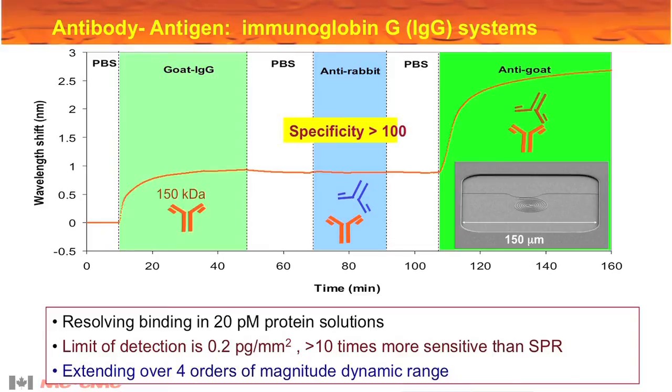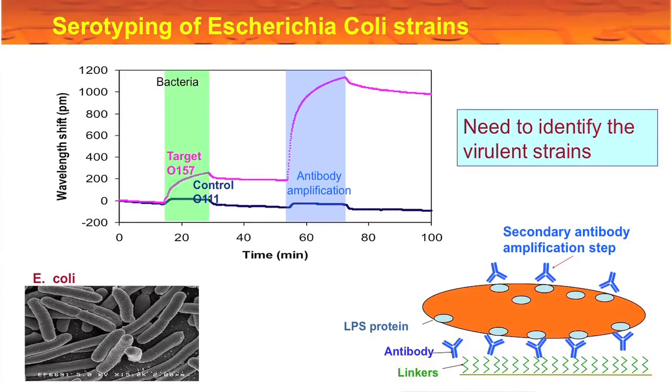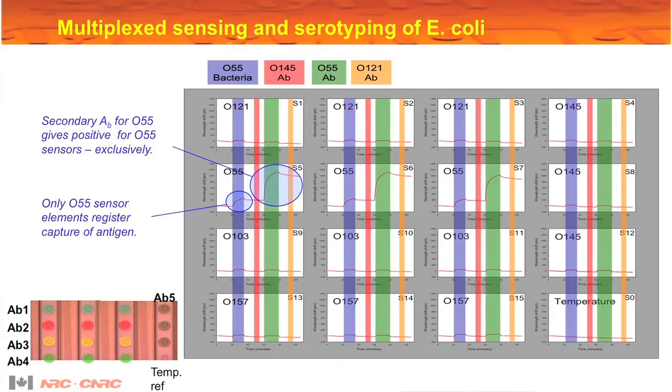One work that we've been concentrating on is what's called serotyping of bacteria, of pathogens. There are many kinds of bacteria. For example, E. coli is one of the main contaminants in food. But there are many different strains of E. coli and only a handful of them are actually harmful to the human body.